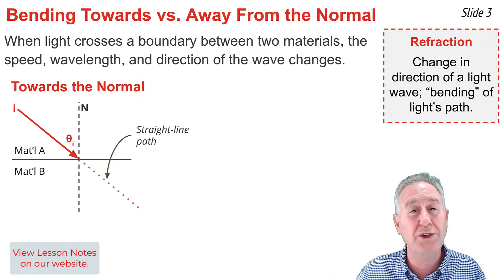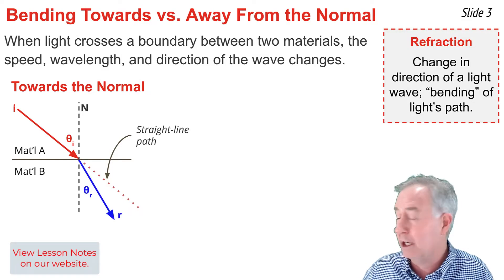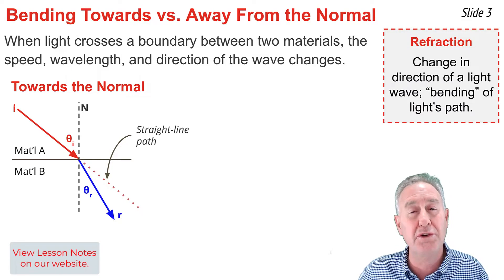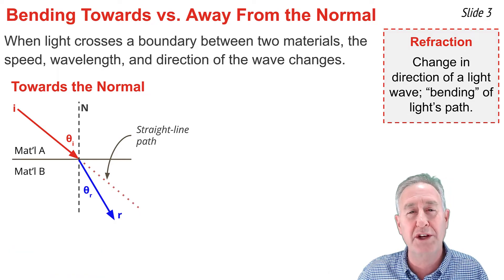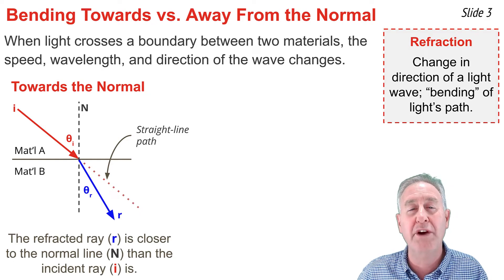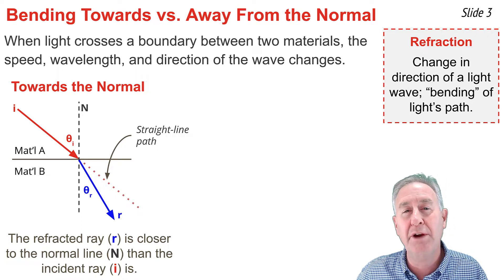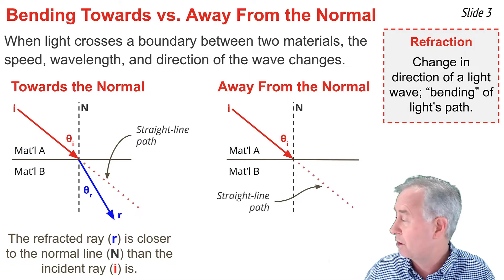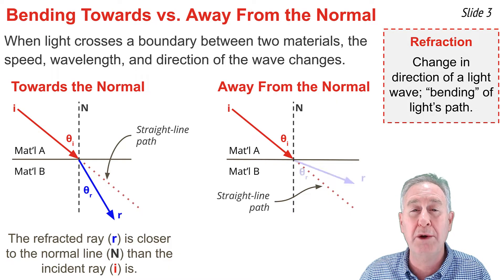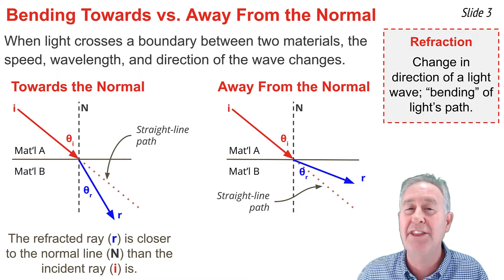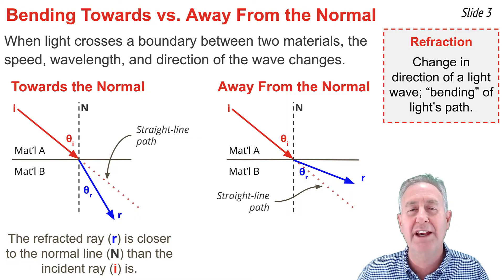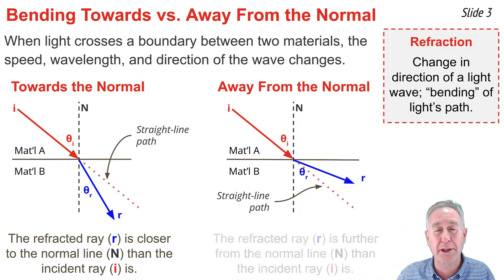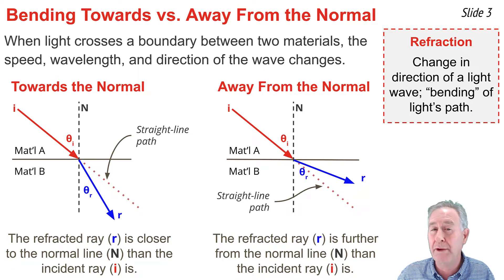If it refracts towards the normal line, then the refracted ray will be located in the region between the normal line and the dashed straight line path. In this situation of bending towards the normal line, the blue refracted ray is closer to the normal line than the red incident ray is. But a light ray could also refract away from the normal line — the refracted ray will then be located in the region between the boundary line and that dashed straight line path, and the blue refracted ray is further away from the normal line than the red incident ray is.